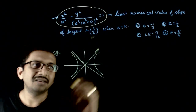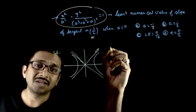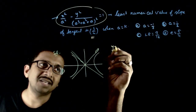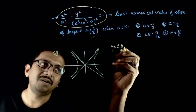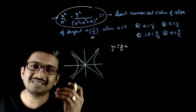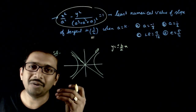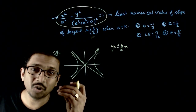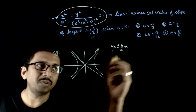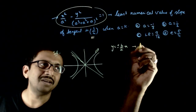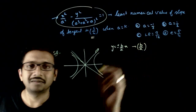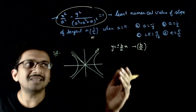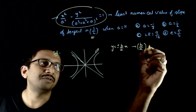What are the asymptotes? y = ±(b/a)·x. So the least numerical value of slope is b/a, and this is given as 3/4.